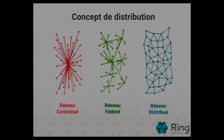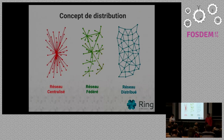There are different kinds of distributed systems. The classic kind of information system would be a centralized system — everything on a single server or single node that has all information from everybody and authenticates different users. That's the classic form of web services, proprietary services, but also many free software services hosted on a single server or by a single organization.